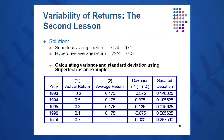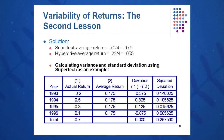Step one: add up all the returns and calculate the average. I'm going to add the four returns up and get 0.7, divide by four, and get an average of 0.175. Step two: calculate the deviation — take the actual minus the average, and watch your sign. It's column one minus column two, so minus 0.2 minus 0.175 equals minus 0.375, and 0.5 minus 0.175 equals 0.325, and so on down the column.